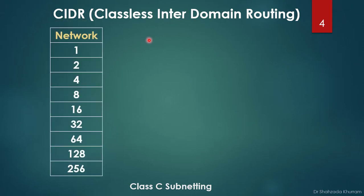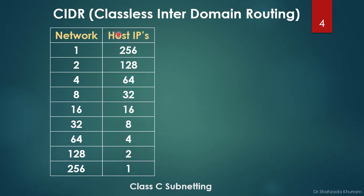I've made a simple table to remember. Starting from 1, each row doubles: 1, 2, 4, 8, 16, 32, 64, 128, 256 — up to 256 because this is a Class C network. The host IP column goes in the same reverse order: 1, 2, 4, 8, 16, 32, 64, 128, 256.